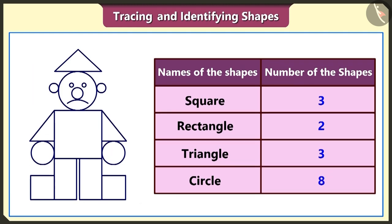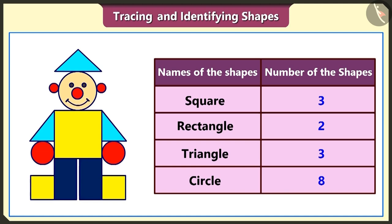We got to know that there are three squares, two rectangles, three triangles and eight circles used in the making of the doll. But, why is he not smiling? Let's fill it with colours. Look, Thumpkin! It is smiling after we filled it with colours!